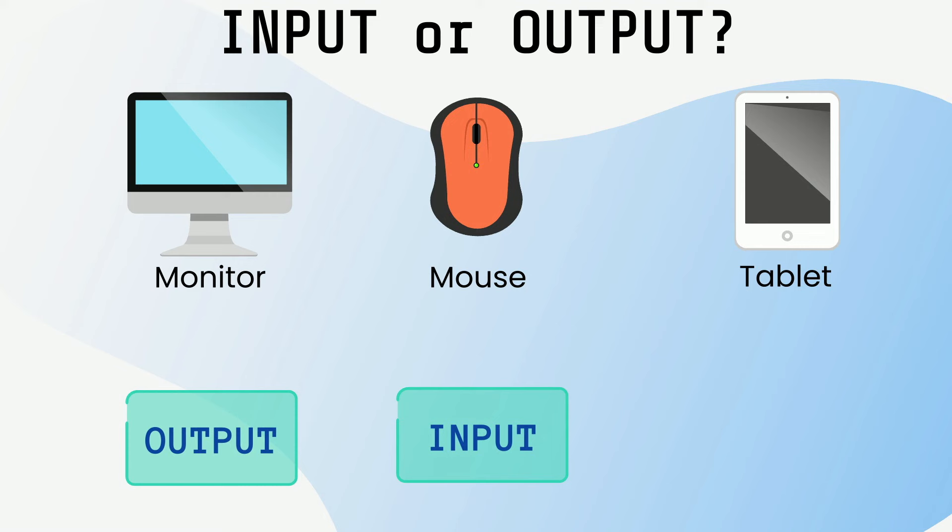A tablet can be an input and an output device. We input information using the touch screen. The tablet then sends outputs that appeal to our sense of sight through images on the screen, hearing through sounds from the speakers, and touch through vibrations.